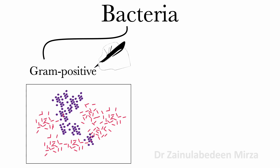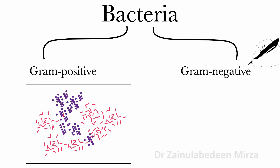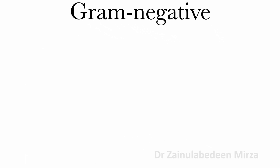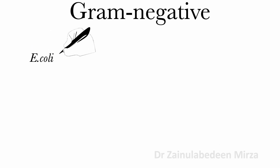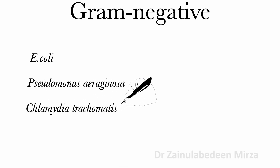Bacteria are divided into gram-positive and gram-negative. There are many gram-negative bacteria, such as E. coli, and pathogenic bacteria such as Pseudomonas aeruginosa, Chlamydia trachomatis, and Yersinia pestis.